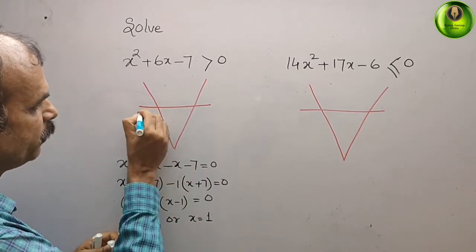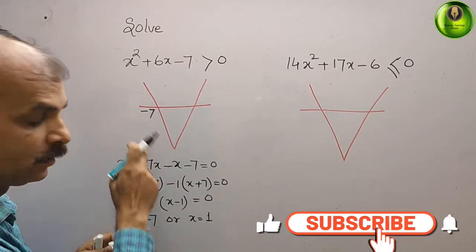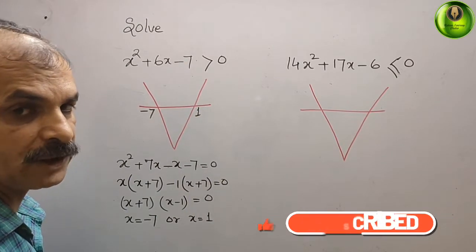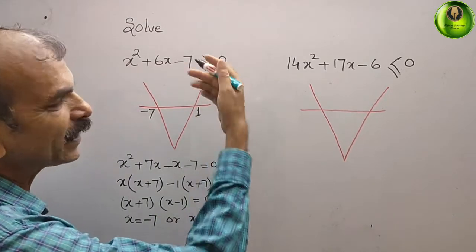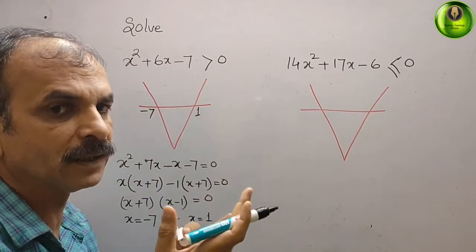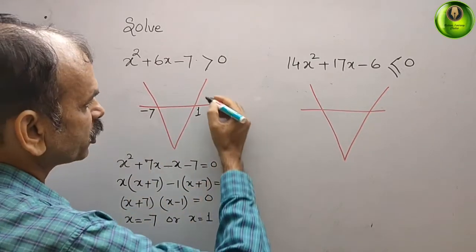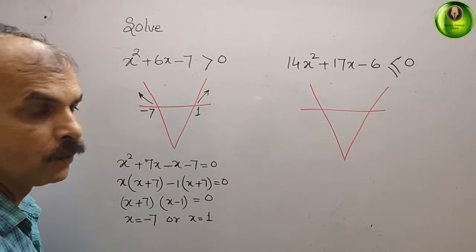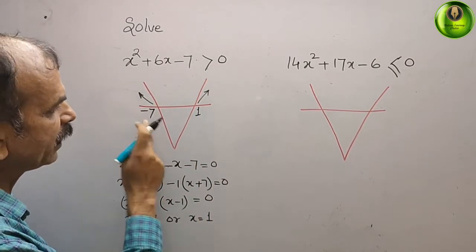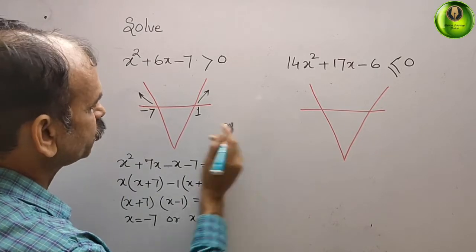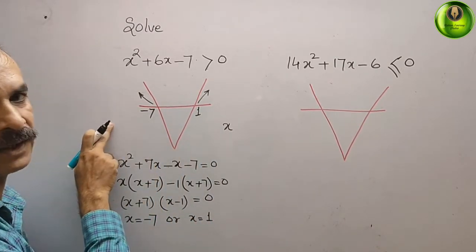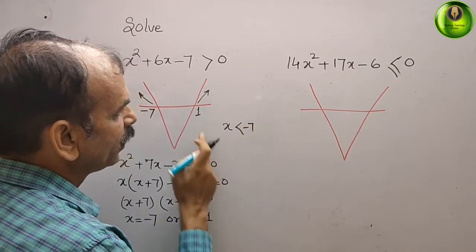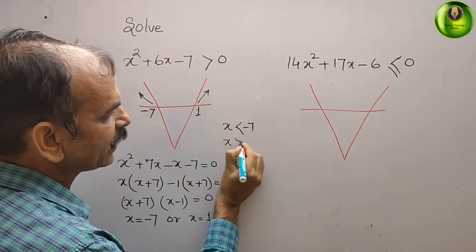Place the roots on the number line: -7 on the left and 1 on the right. Now check the inequality sign — they said greater than 0, meaning we need the positive region. Since the parabola opens upward, the positive regions are outside the roots. So x < -7 or x > 1.